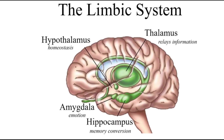In 'The Emotional Brain,' Goleman delves into the neuroscience behind emotions, explaining how the brain processes emotional responses and how they influence behavior and decision-making. He introduces the concept of the limbic system and its significance in managing emotions.